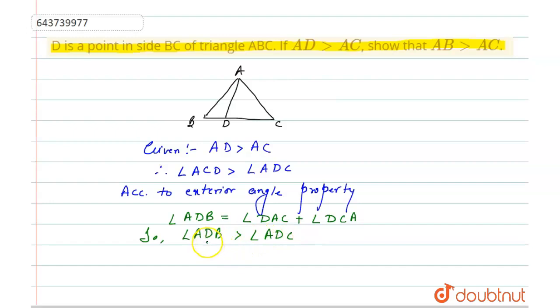is equal to angle DAC plus angle DCA, and these two sum angles will be written as ADC. So this means ADB will always be greater than this sum. So this implies that